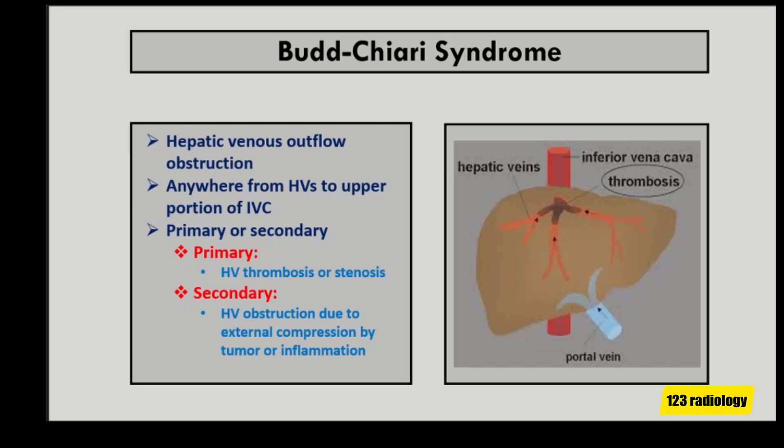Budd-Chiari syndrome is commonly classified into primary and secondary. Primary Budd-Chiari syndrome is caused by venous obstruction, mostly due to hepatic vein thrombosis and less frequently due to hepatic vein stenosis. Secondary Budd-Chiari syndrome is caused by hepatic vein obstruction due to external compression by a tumor or by an infectious process.